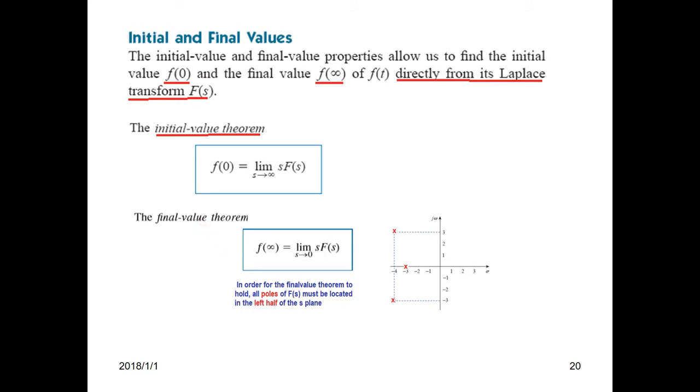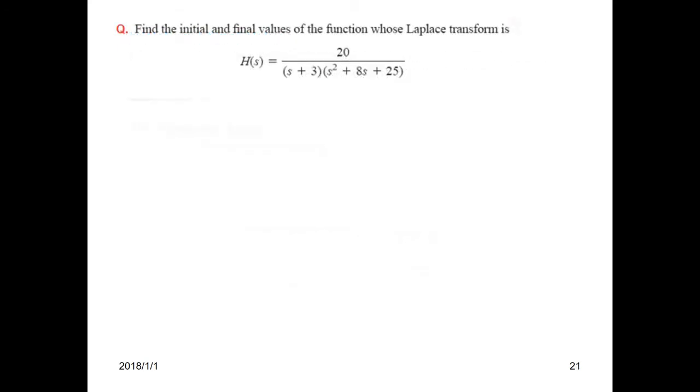For the final value theorem to be valid, the poles have to be on the left hand side. We'll see what the poles are when we do the examples. Let's solve a problem with initial and final values.